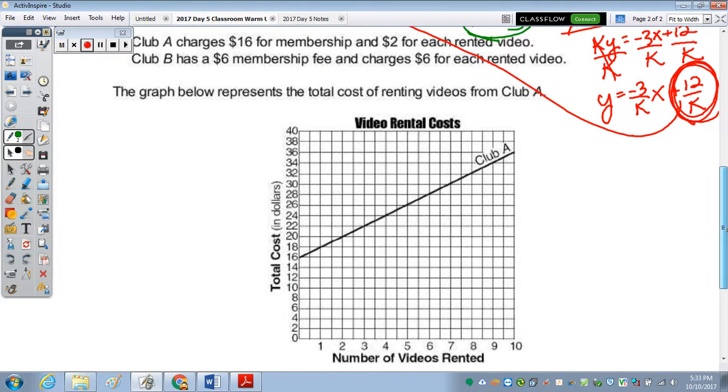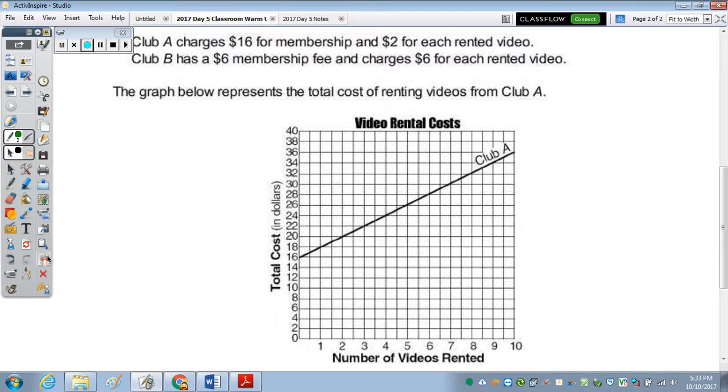So let's look at the last question. I'm going to leave it so we can't see parts A and B. But we can at least see the question. It says two video rental clubs offer two different rental fee plans. Club A charges $16 for membership. So this is Club A. That's why we see a y-intercept of 16. And then it charges $2 for each video rented. So for the first video, you can see it went up from a 16 to an 18. So it went up two.